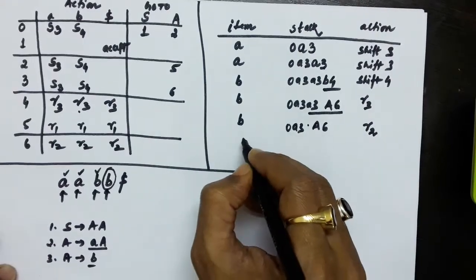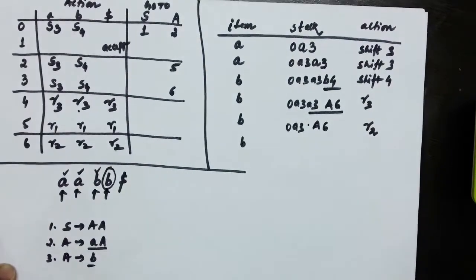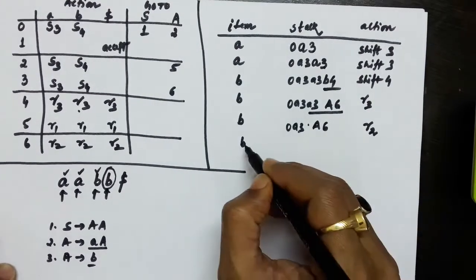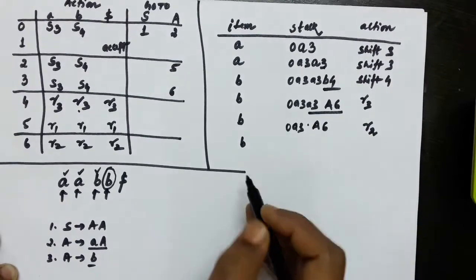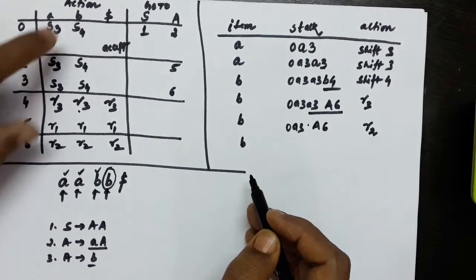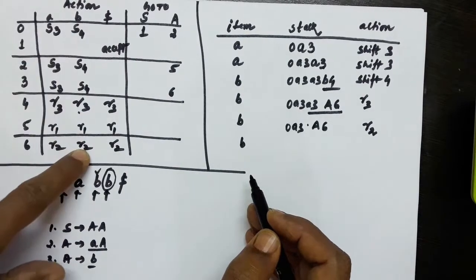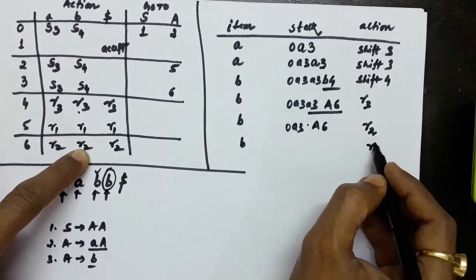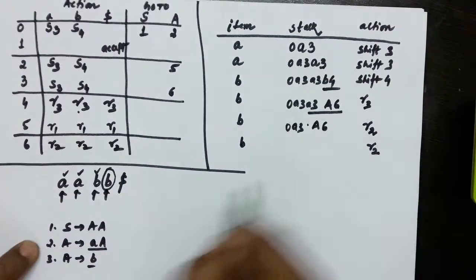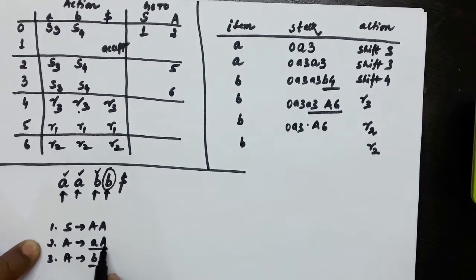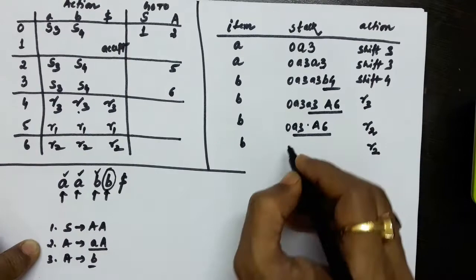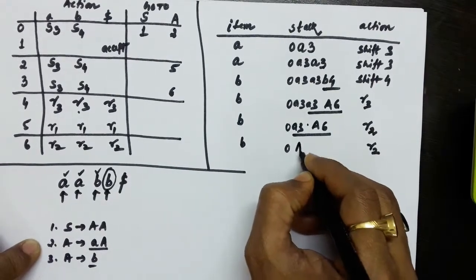The b symbol is still live — it has not been converted or shifted yet. We check 6 on b again: row 6, b column gives R2. So we reduce again by production rule 2 — A produces small a capital A. Two symbols on the right-hand side means four symbols from the stack are replaced by capital A. We now have zero and capital A on the stack.